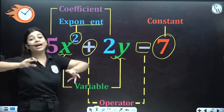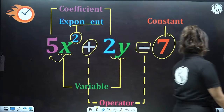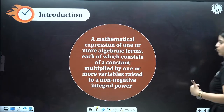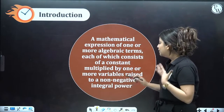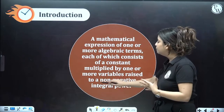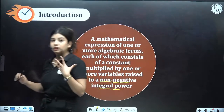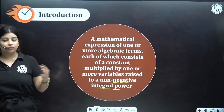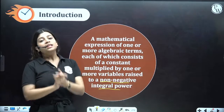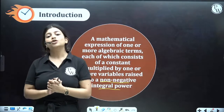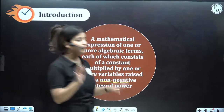All these things collectively form a polynomial. But one important thing is that a polynomial should not be raised to a non-negative integral power. This means the power of the polynomial — when we talk about the power of the variable — should always be a whole number. No other number will be acceptable.